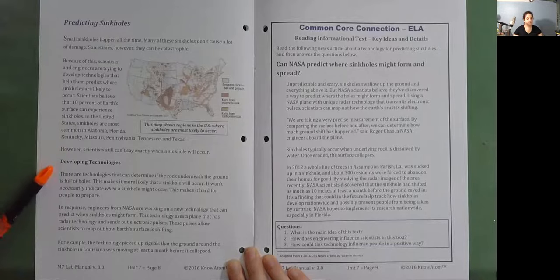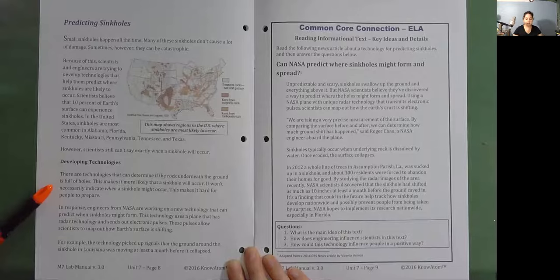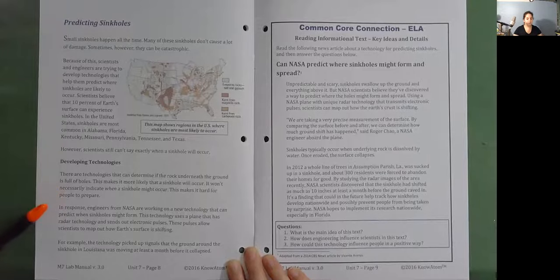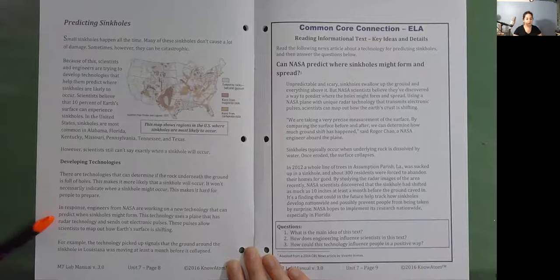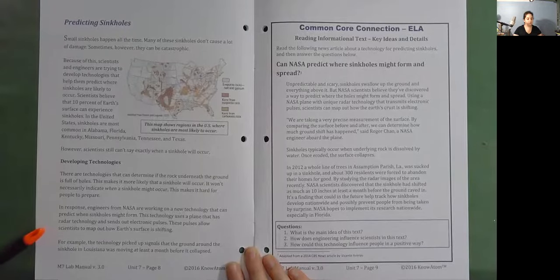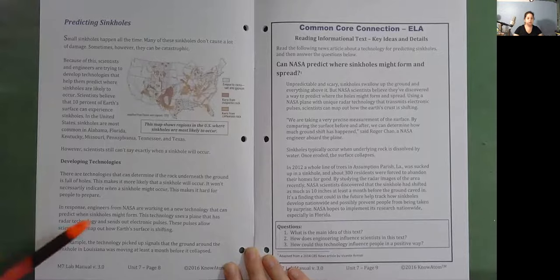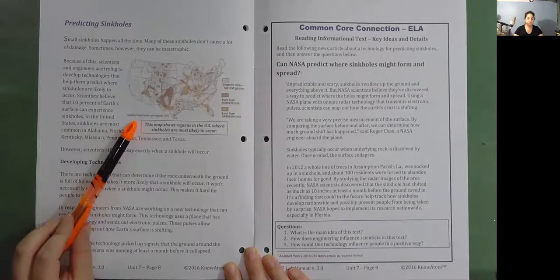Developing technologies. There are technologies that can determine if the rock underneath the ground is full of holes. This makes it more likely that a sinkhole will occur. It won't necessarily indicate when a sinkhole might occur. This makes it hard for people to prepare. In response, engineers from NASA are working on a new technology that can predict when sinkholes might form. This technology uses a plane that has radar technology and sends out electronic pulses. These pulses allow scientists to map out how Earth's surface is shifting. For example, the technology picked up signals that the ground around the sinkhole in Louisiana was moving at least a month before it collapsed. This map shows regions in the U.S. where sinkholes are most likely to occur.